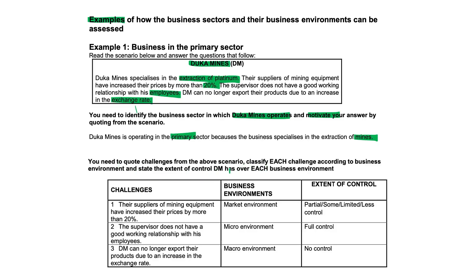Next, you need to quote challenges from the scenario and classify each challenge according to the business environment, and also state the extent of control that DM has over each. Their suppliers of mining equipment have increased their prices by more than 20% — that is a huge supplier issue. This is part of the market environment. We have partial control, just a little bit, because our competitors can also buy from these same suppliers.